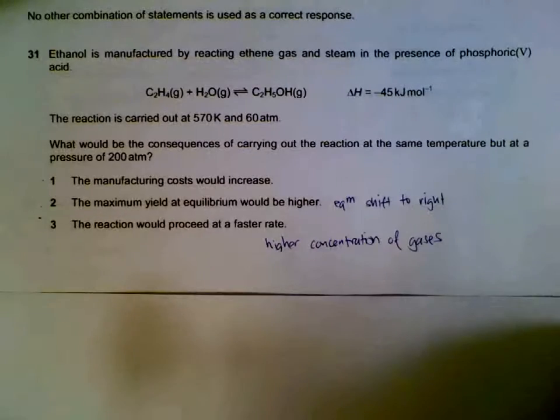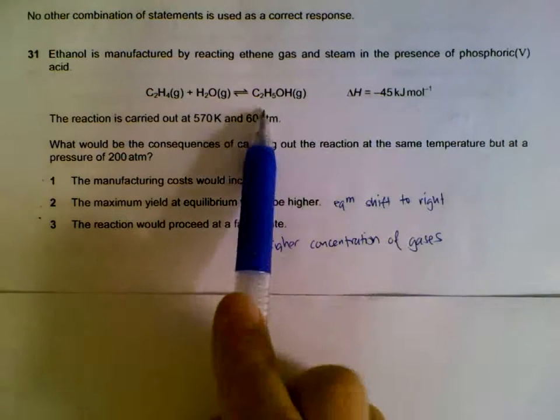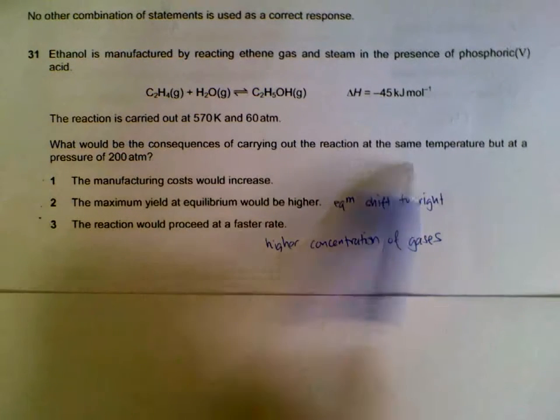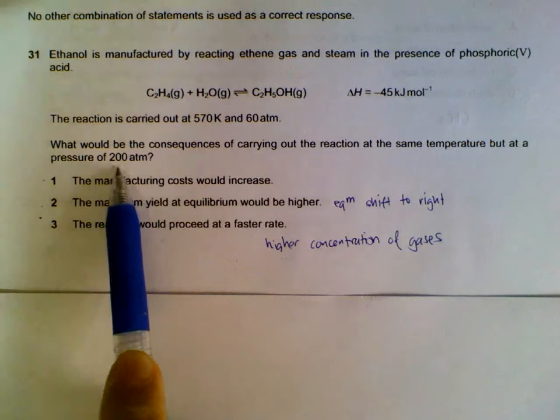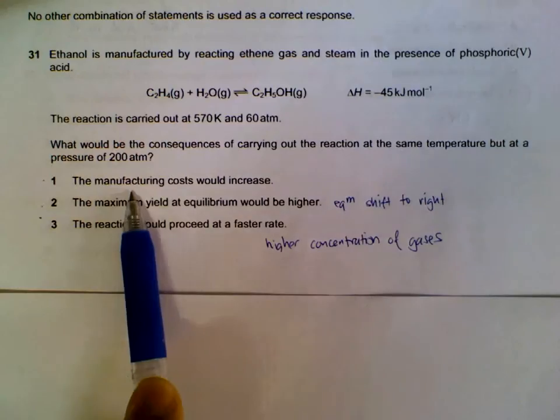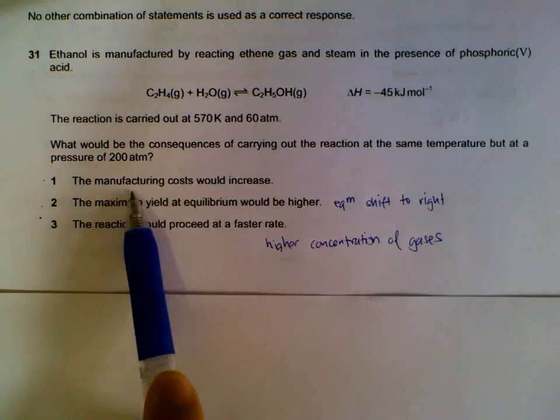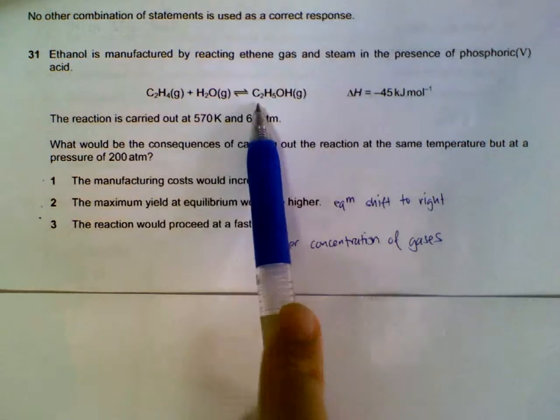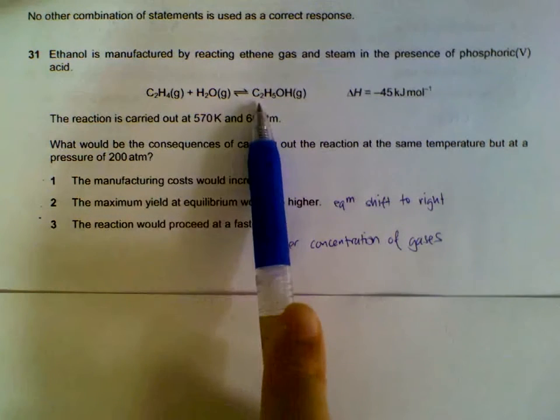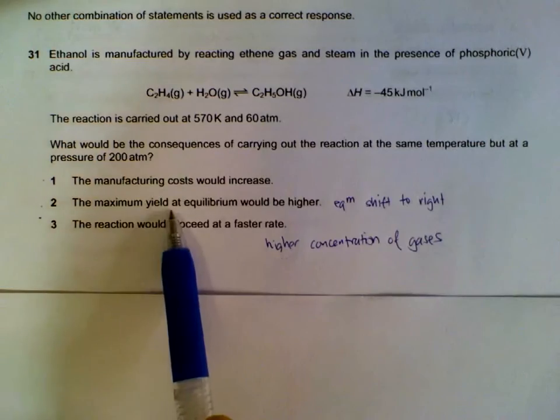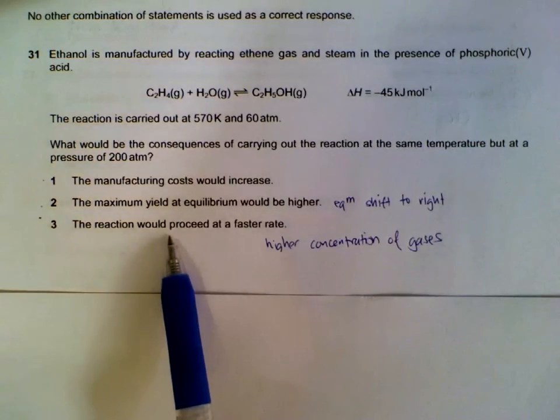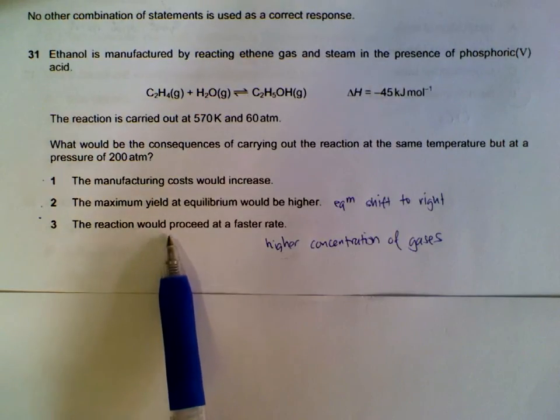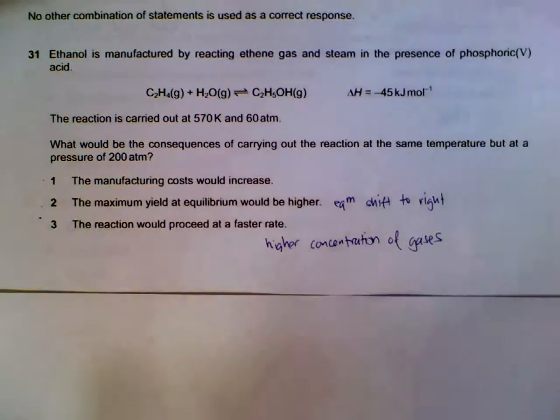Question 31. We have this equilibrium that is exothermic. What will happen when we carry it out at a higher pressure? When we have higher pressure, the cost of the machineries to maintain them will increase. At higher pressure, the equilibrium will shift to the side that has less gas molecules to relieve the pressure, so it will shift to the right and the yield will also increase. The reaction will proceed at a faster rate because at high pressure, the gases are more concentrated, so speed of reaction increases. So all three statements are correct.